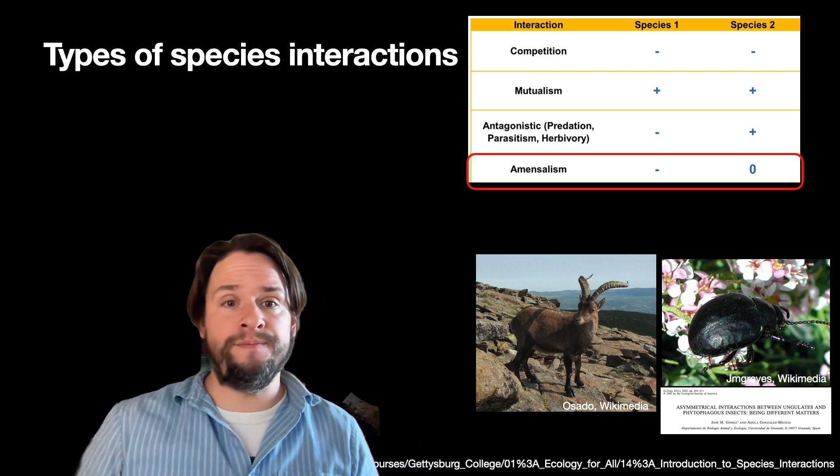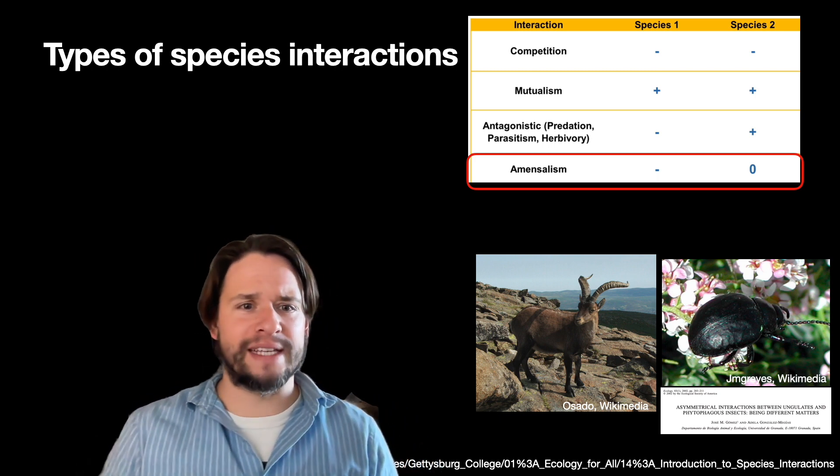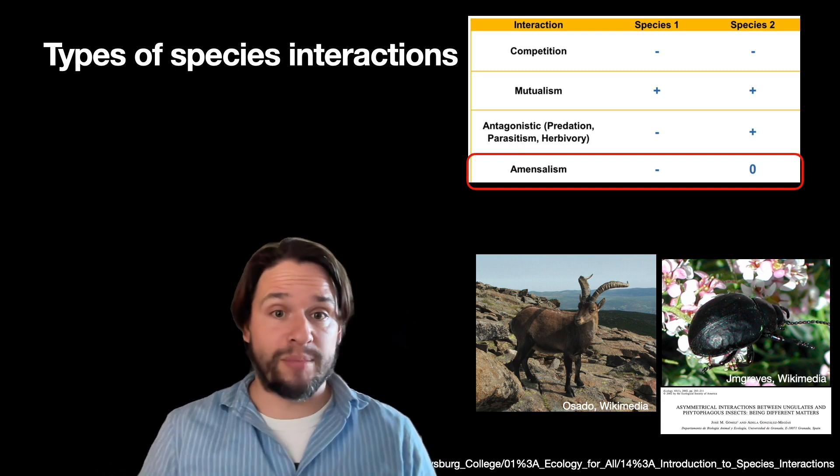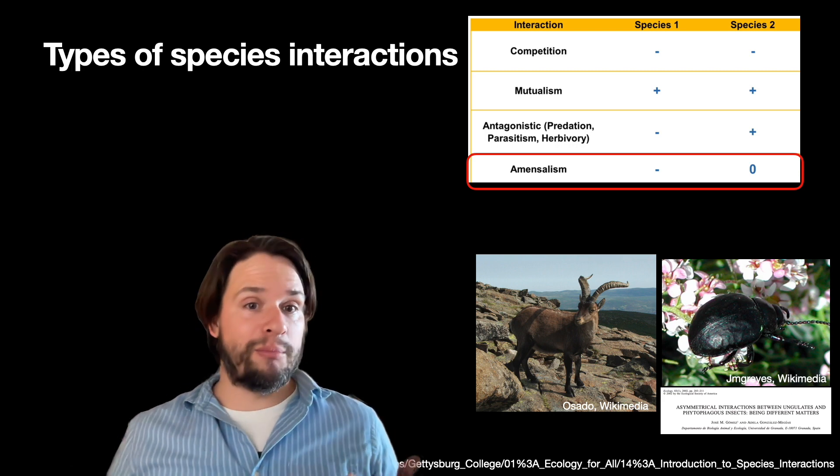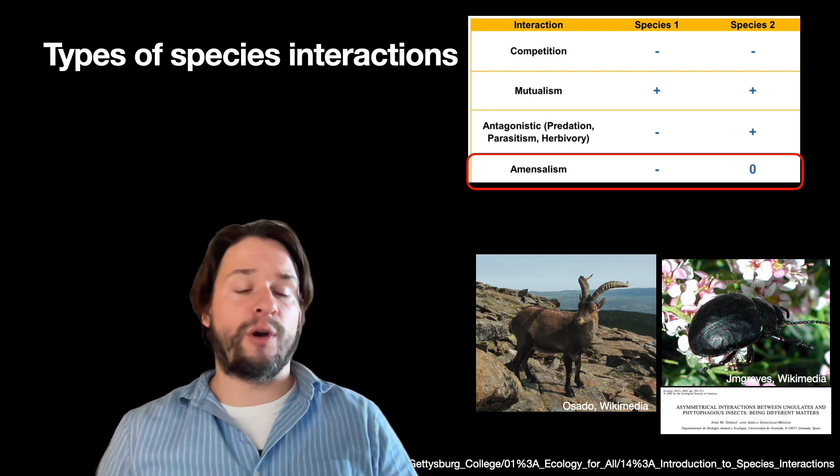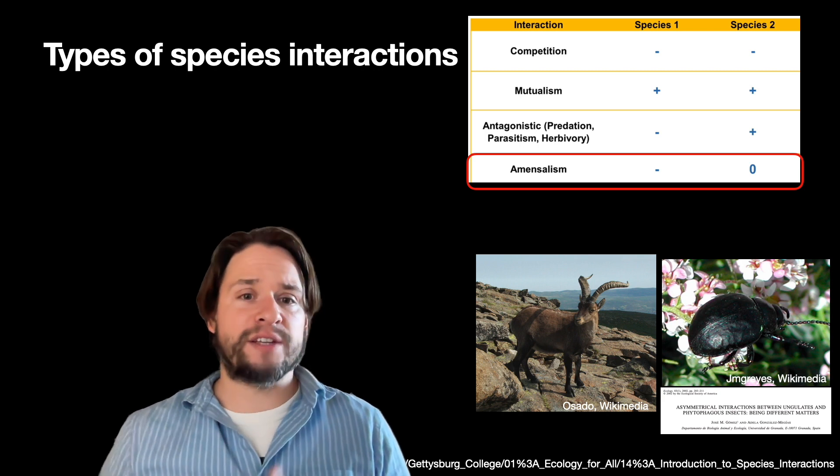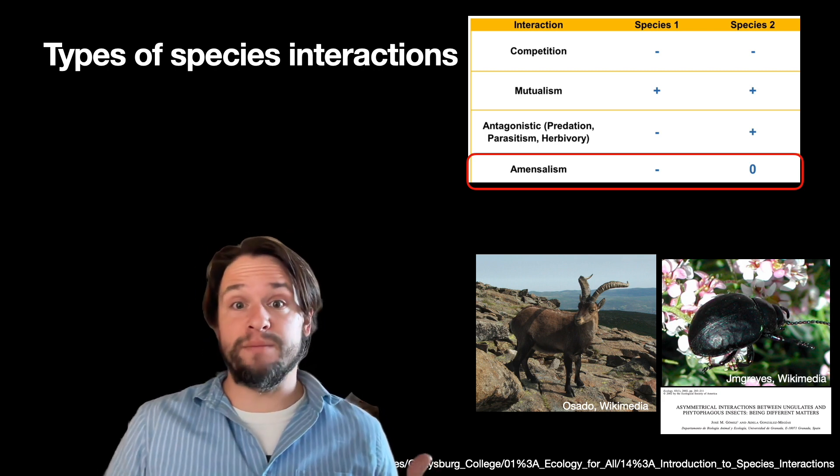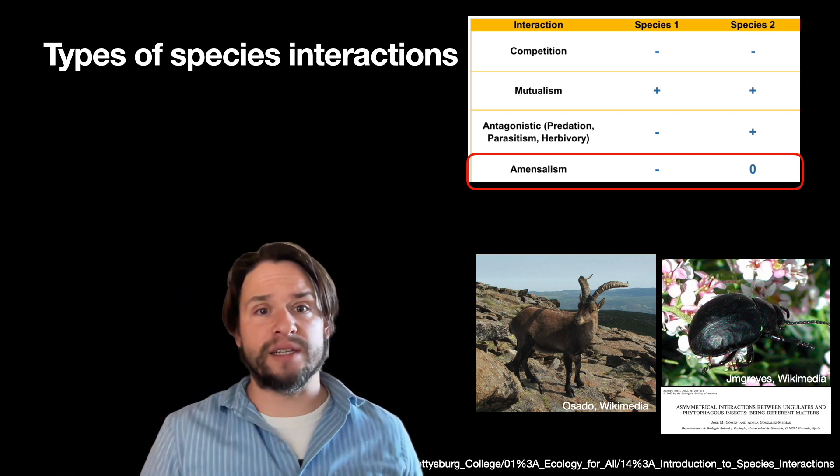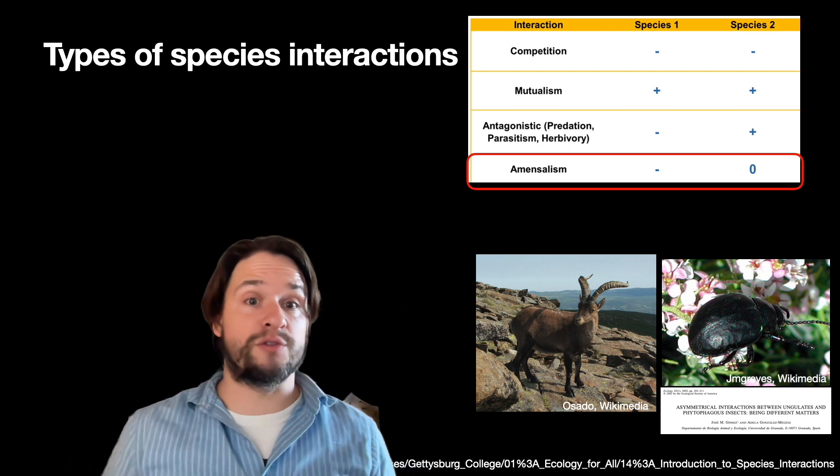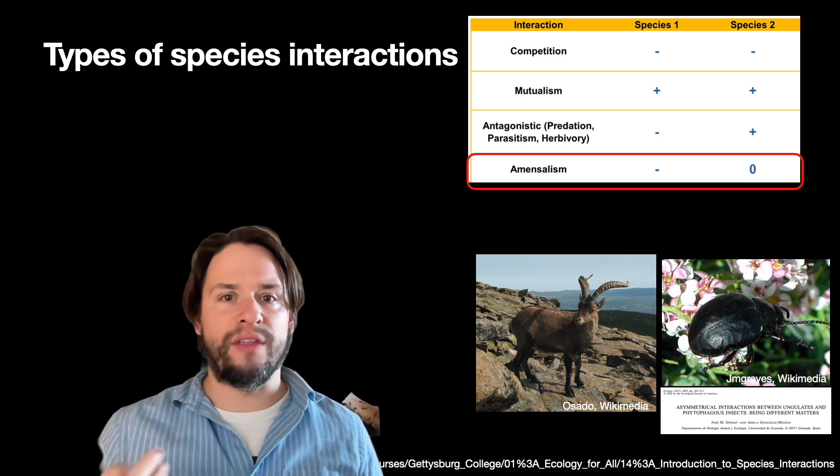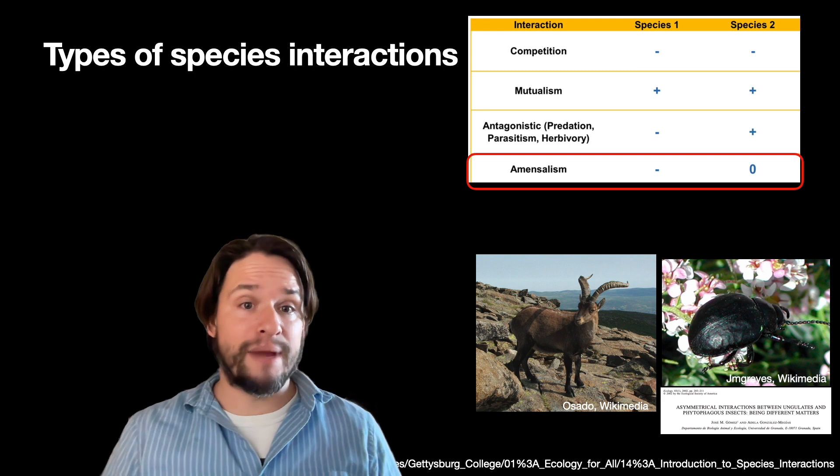So for example, here there's a nice example of an ibex and a weevil that actually feed on the same plant. And as you might suspect, the ibex actually don't care much about weevils, so ibex aren't really affected by the presence of weevils. But weevils on the other hand are negatively affected by the presence of ibex, both through direct damage and also through reduction of that resource. So one partner unaffected, the other partner negatively affected, is amensalism.